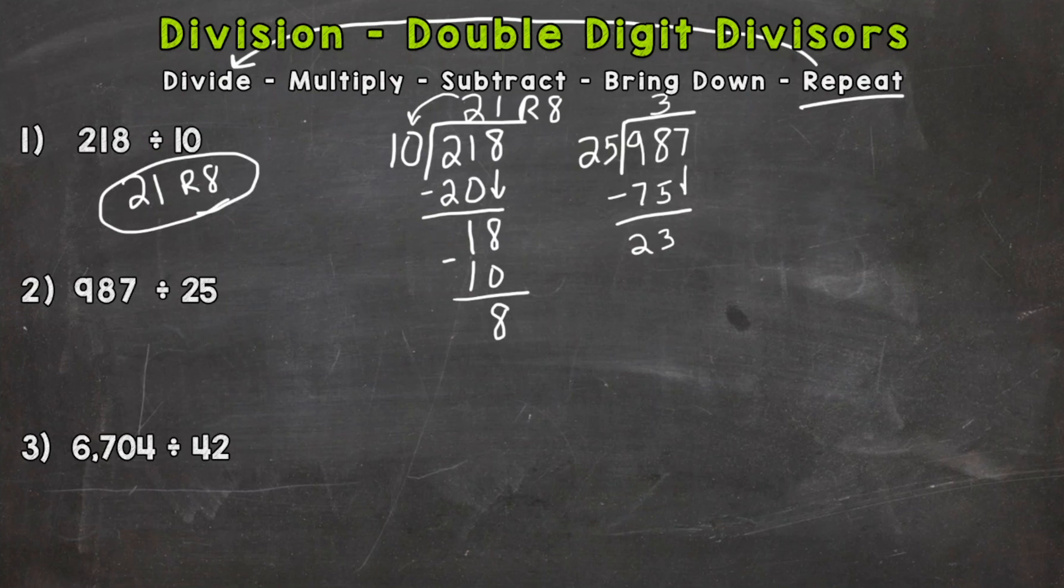So after we subtract, we need to bring down that 7, and we have 237. So we need to think about how many groups of 25 we can pull out of 237. You might not know that off the top of your head, so we need to estimate and check and see how close we can get. So what I like to do is try to think of something we know. Well, we know 25 times 4 is 100—that's not real close. So let's try, well, I know 25 times 10, I can just add a 0 to 25 and I get 250.